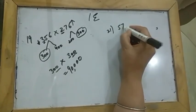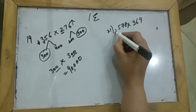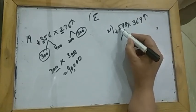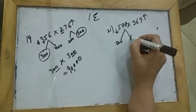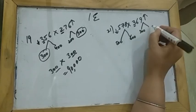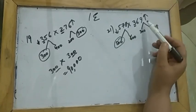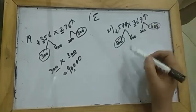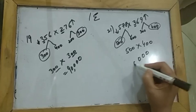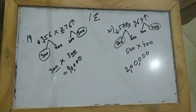One more example: 578 multiplied by 316. The first number lies between 500 and 600, and the second lies between 300 and 400. Rounding the first number downward gives 500, and rounding the second number upward gives 400. Multiplying 500 by 400 — five fours are 20 — so the answer is 200,000.